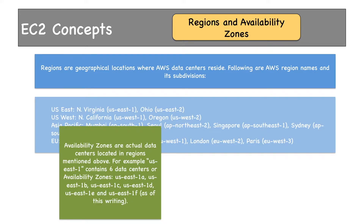These data centers are actual physical data centers — land, buildings, and then you have servers, electrical equipment, security, etc. This is where all AWS resources reside. As we are talking about EC2, we will be launching EC2 instances or EC2 virtual machines on these AZs.